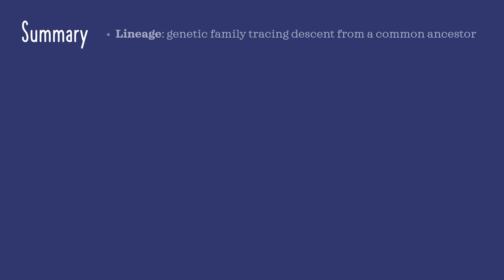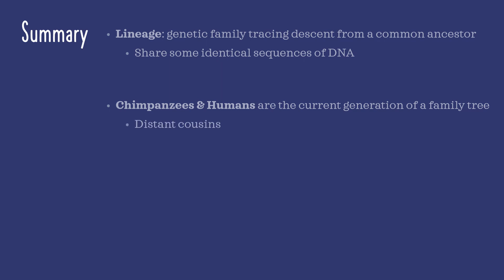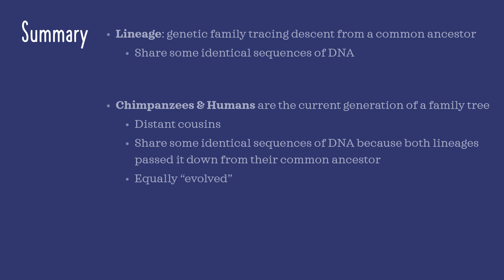In summary, you learned that a lineage is a genetic family tracing descent from a common ancestor. Therefore, all individuals in a lineage share some identical sequences of DNA. You also learned that chimpanzees and humans are the current generation of a large family tree. The two species are distant cousins, who share some identical sequences of DNA because both lineages passed it down from their common ancestor. Therefore, chimpanzees and humans are considered equally evolved.